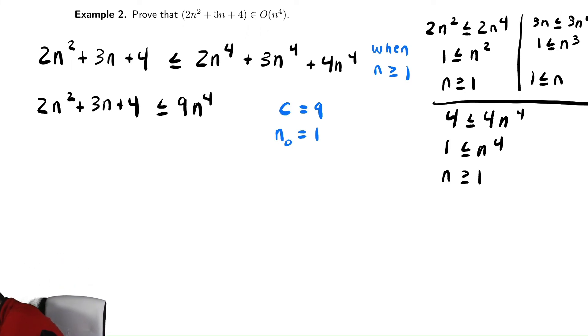So we can now conclude, because we found the c and the n naught, that the given function, 2n squared plus 3n plus 4, is in big O of n to the fourth.